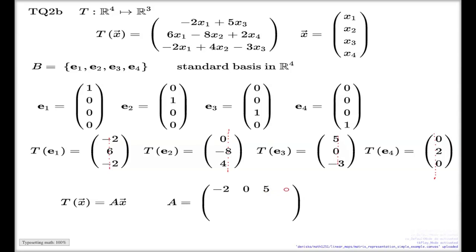So the first row will be negative 2, 0, 5, 0. The second row: 6, negative 8, 0, 2. And the third row: negative 2, 4, negative 3, and 0. And that's the matrix.